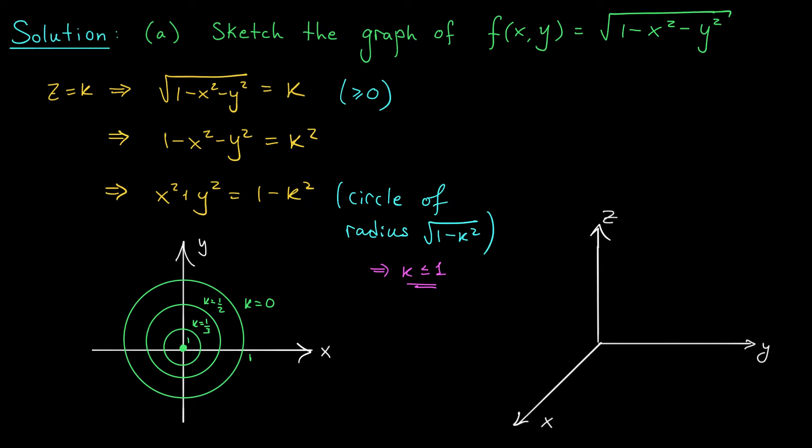So there you have it, our contour plot. We'll raise those contours up to the appropriate heights in R3 and build the frame of our function f(x,y). You can see here that our function is actually going to form the upper half of a sphere of radius 1. Pretty cool huh? This equation describes the upper cap of a sphere of radius 1.